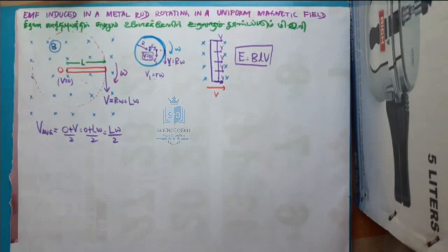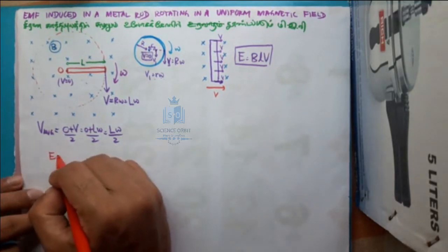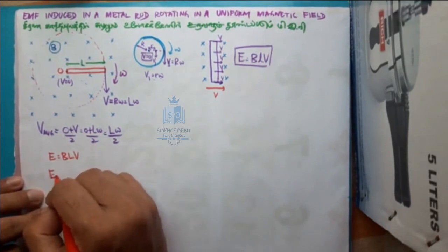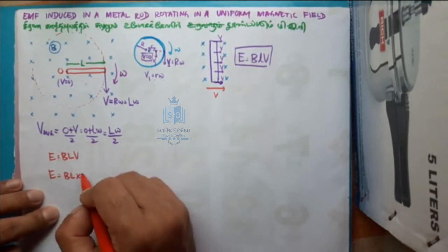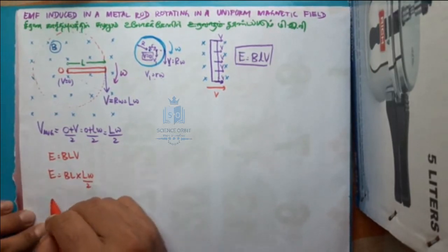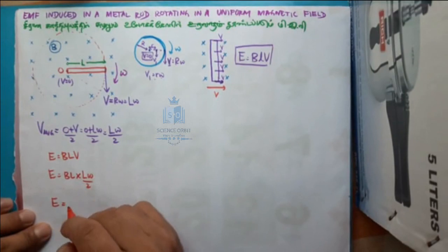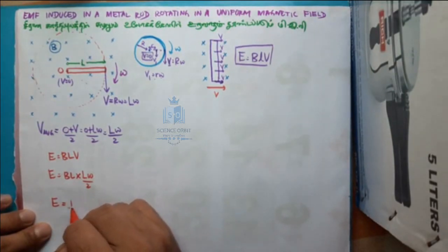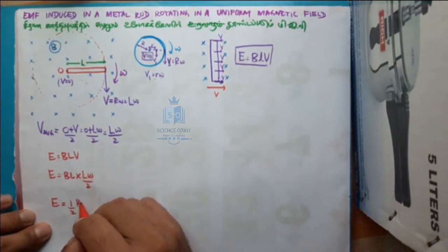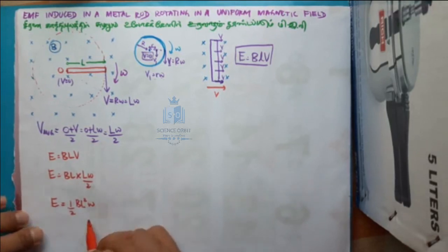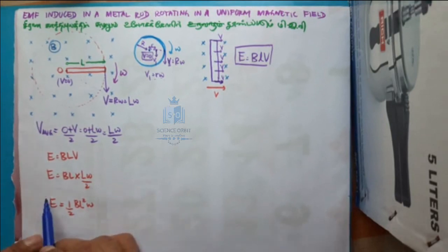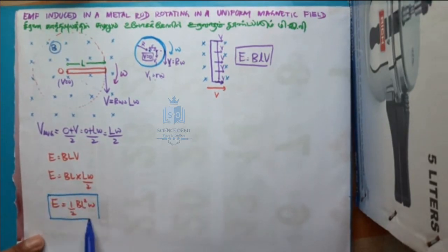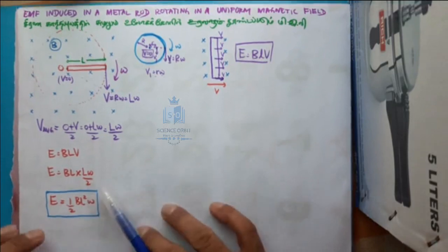Here again you can use the same equation E = BLV, and substitute V with Lω/2. So the final equation becomes E = ½BL²ω.